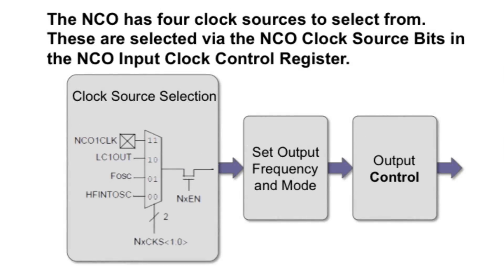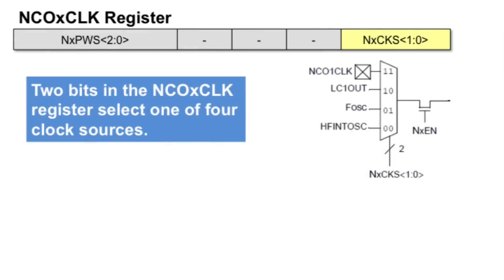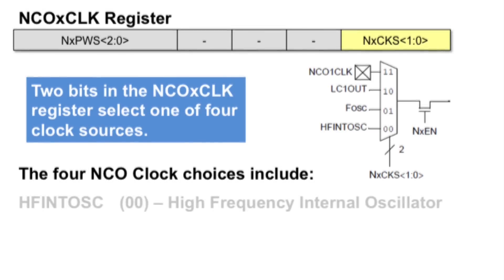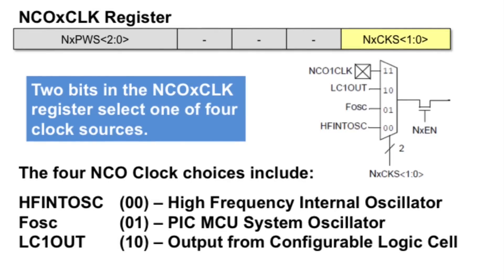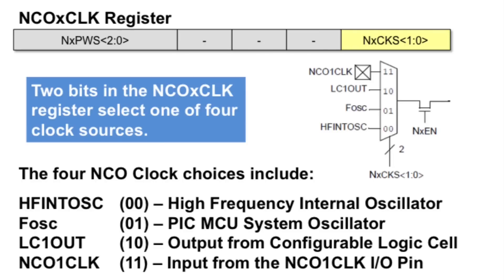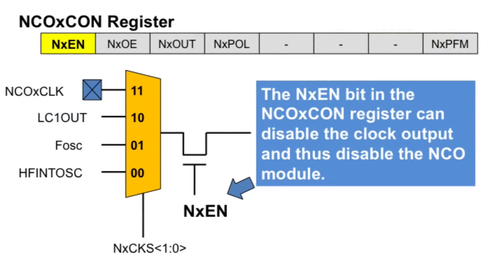The clock source is what drives the NCO module. There are four clock sources to choose from, selected by the NCO input clock control register. These clock sources can come from inside or outside the PIC MCU device. Two bits in the NCO input clock control register select the input clock. Options include the high frequency internal oscillator, the PIC MCU oscillator, an output from a configurable logic cell, and an external signal connected to the NCO CLK IO pin. The clock source can be enabled or disabled by setting or clearing the NCO enable bit, which essentially enables or disables the NCO module.